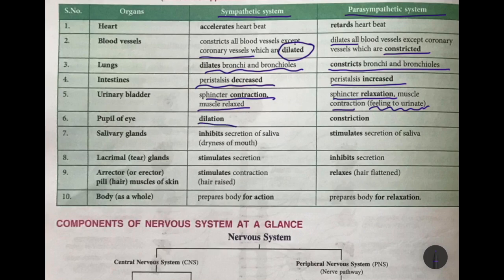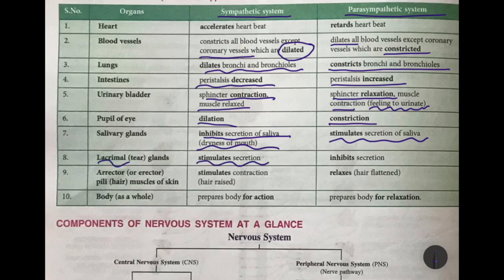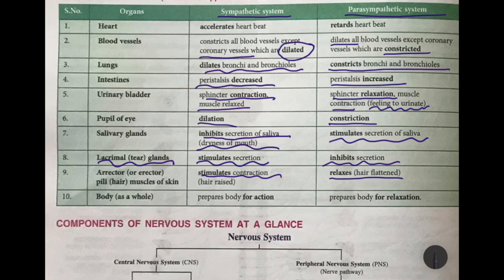The sympathetic system dilates the pupil of the eye so that more light enters, while the parasympathetic constricts it back to normal. The sympathetic does not allow secretion of saliva, making the mouth dry, while the parasympathetic stimulates saliva secretion. The sympathetic stimulates secretion of tears from the lacrimal glands, while the parasympathetic does not. The sympathetic stimulates contraction of the muscles attached to the hair, causing it to raise when cold or scared, while parasympathetic brings it back to normal.